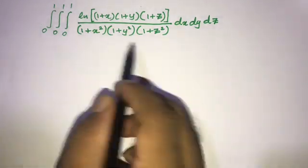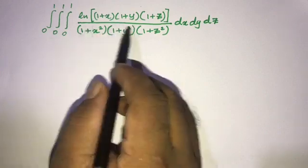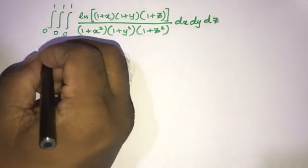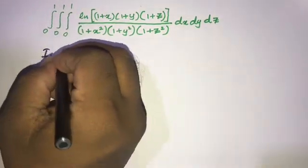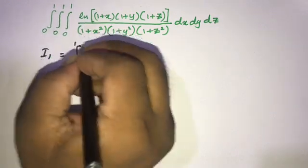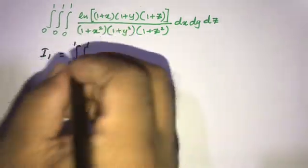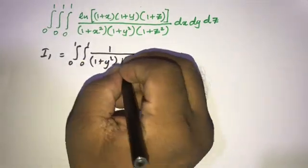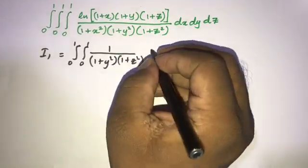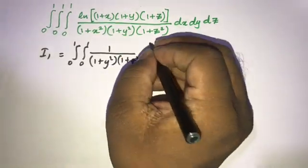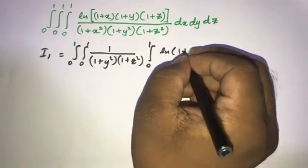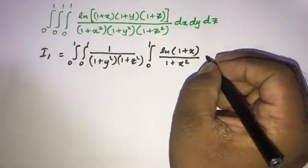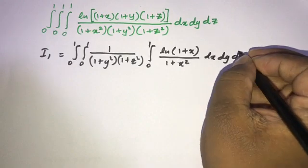Okay, this is a triple integral. Also, you know about properties of natural log, so we can write this as three separate integrals. So we can write I1 is equal to the integral from 0 to 1, 0 to 1, 1 over (1 + y²)(1 + z²), and from 0 to 1 natural log of (1 + x) over (1 + x²) dx dy dz.